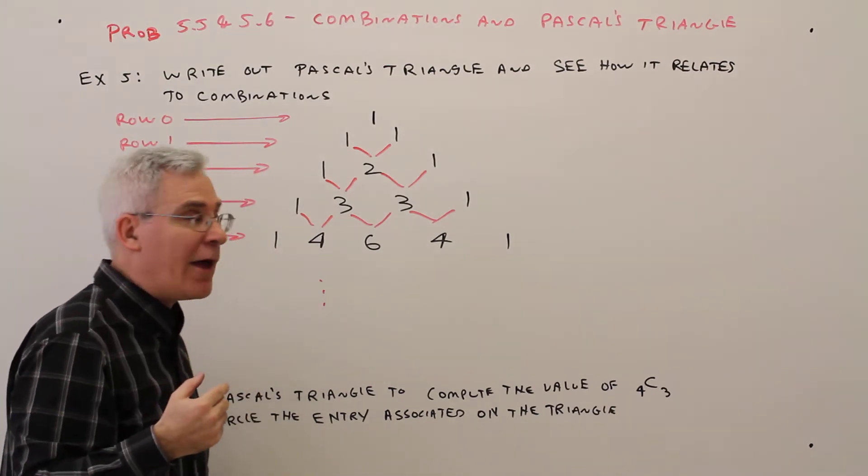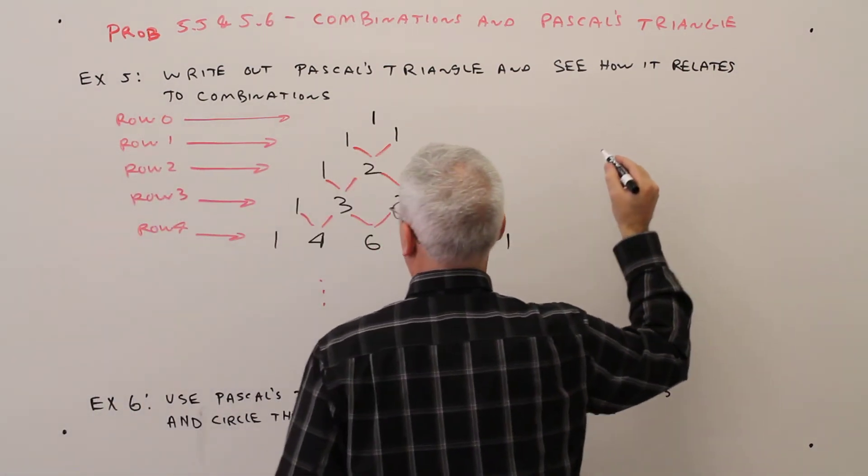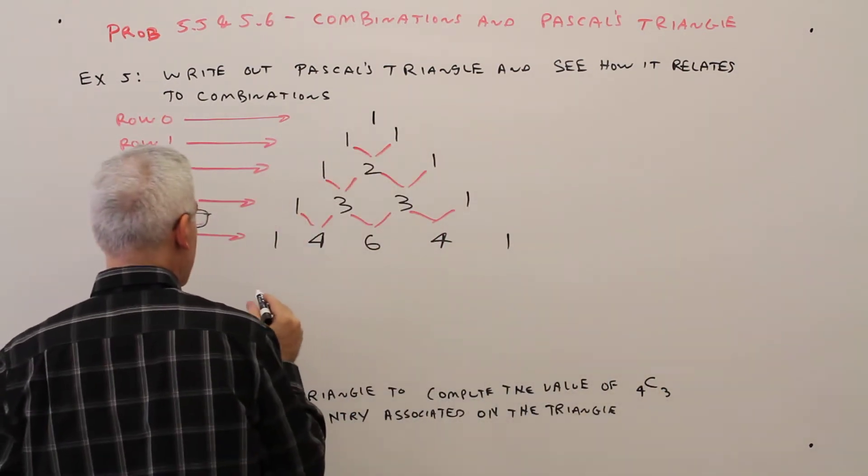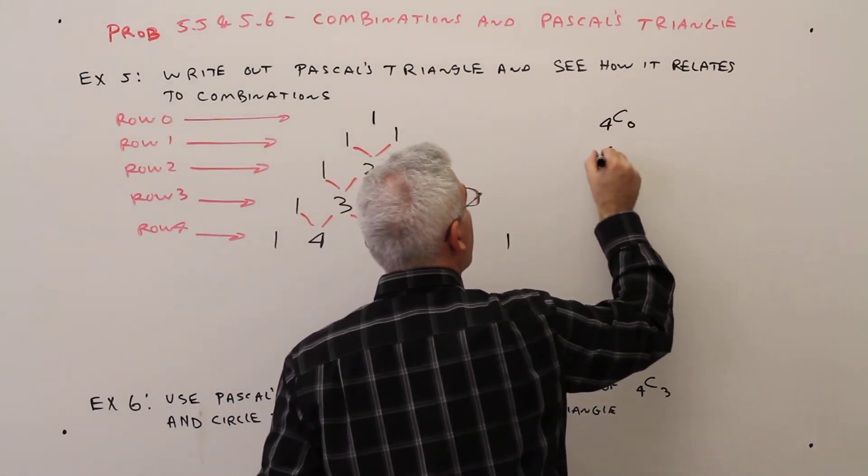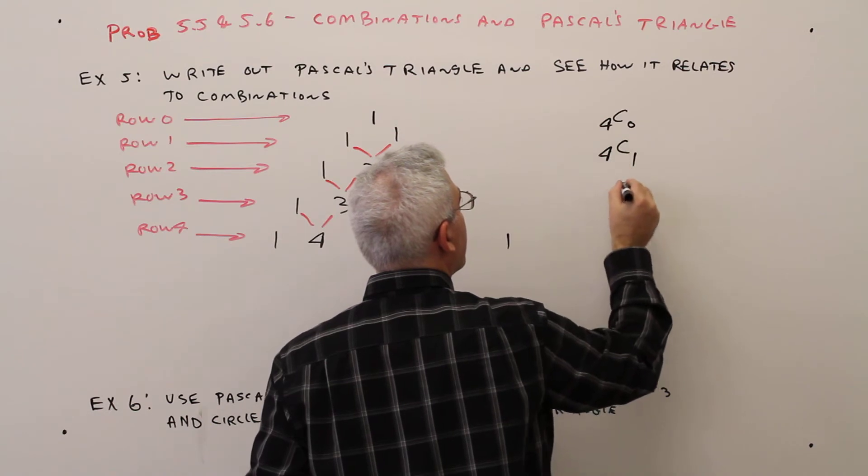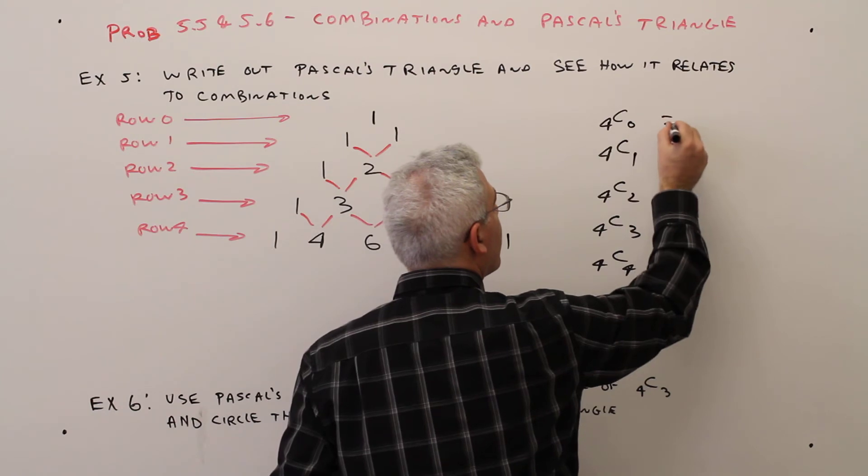I'm going to show you how it's related to combinations. If you were to compute the following combinations, I'll do it right here: 4 choose 0, 4 choose 1, 4 choose 2, 4 choose 3, 4 choose 4.